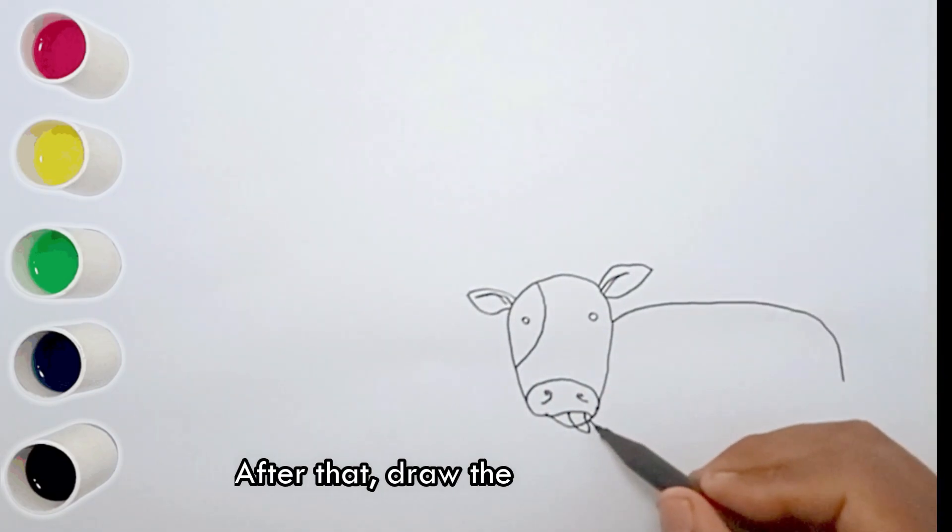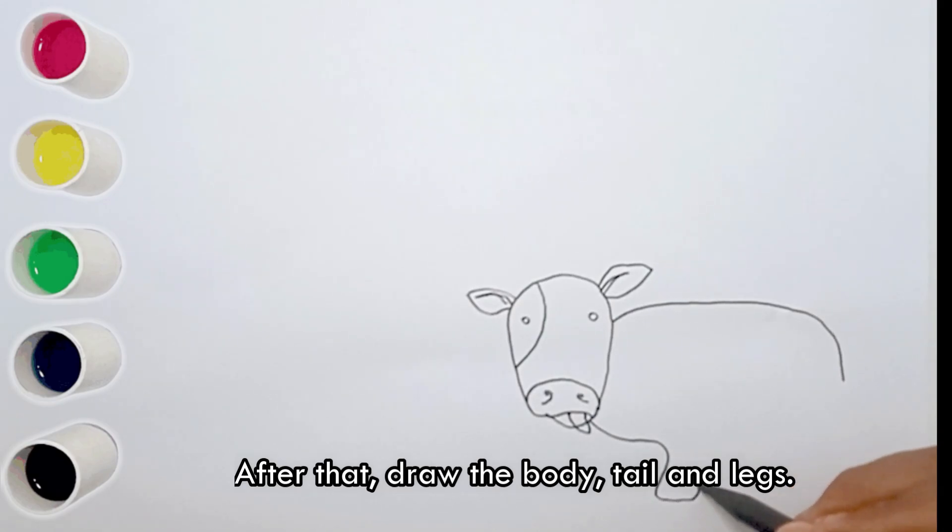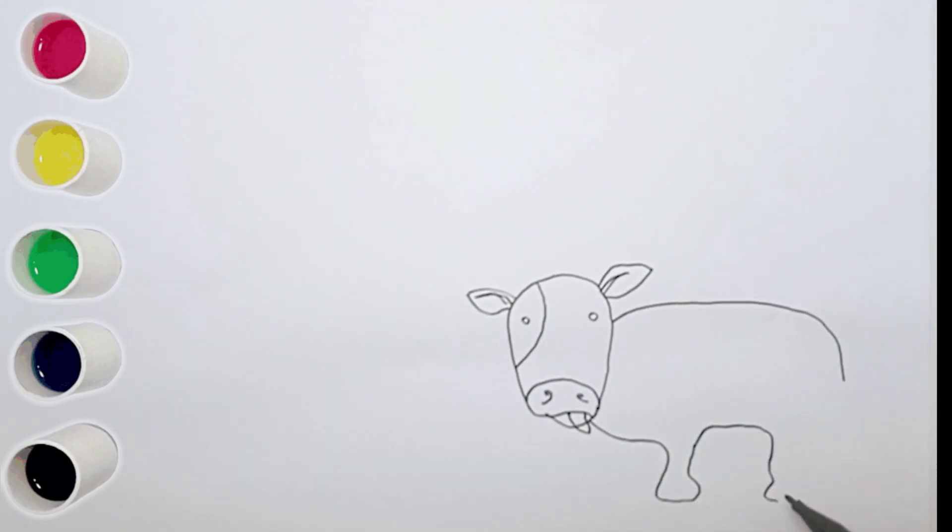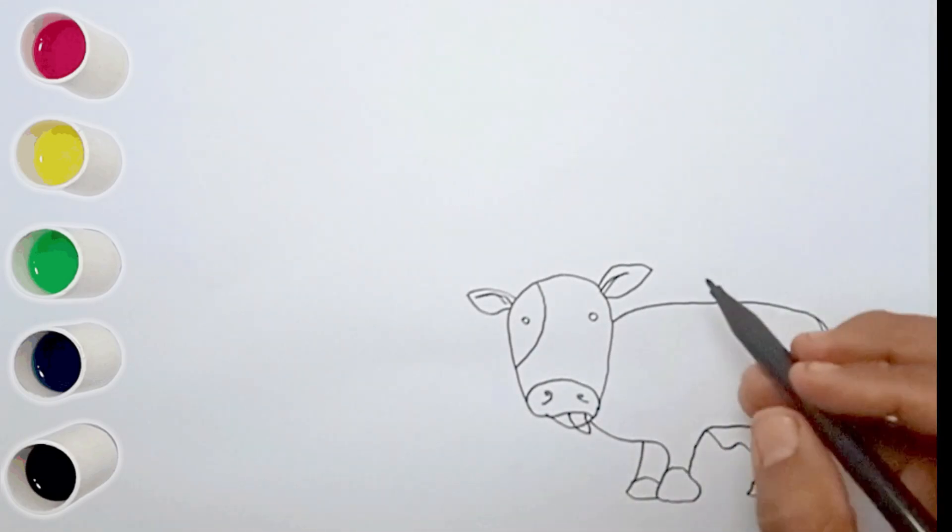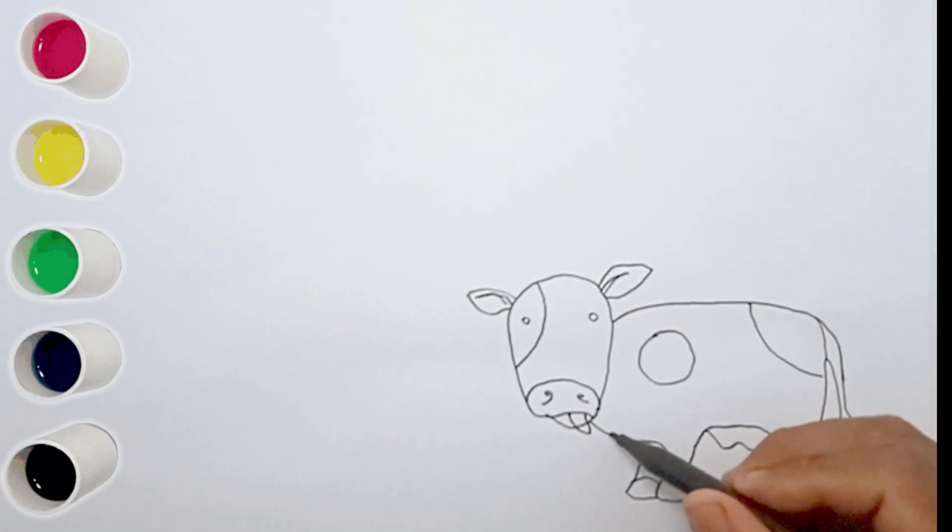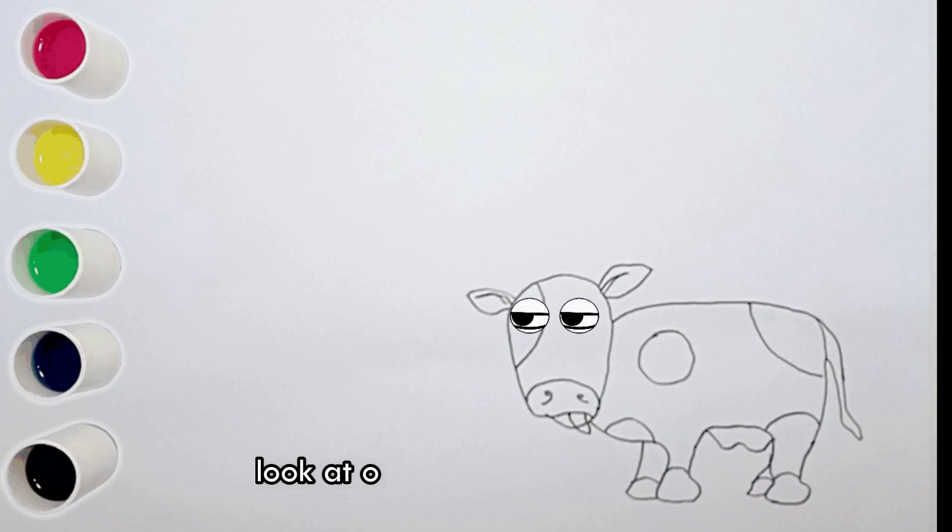After that, draw the body, tail and legs. Look at our calf ready.